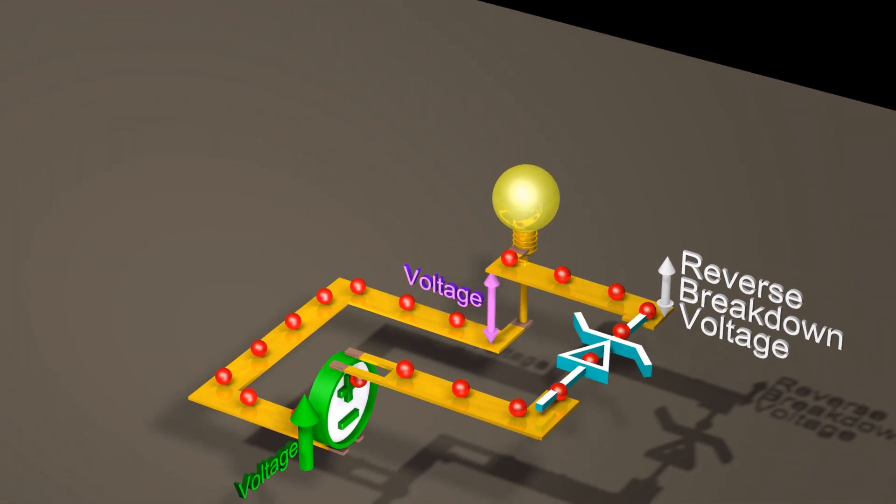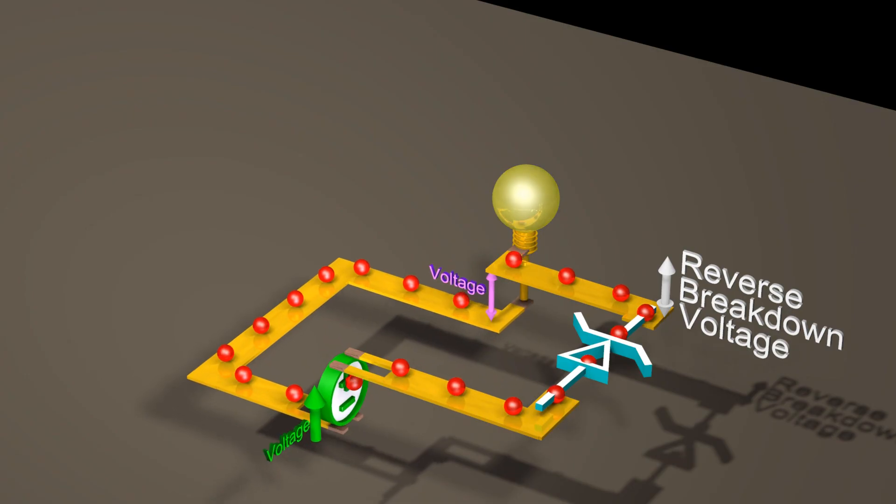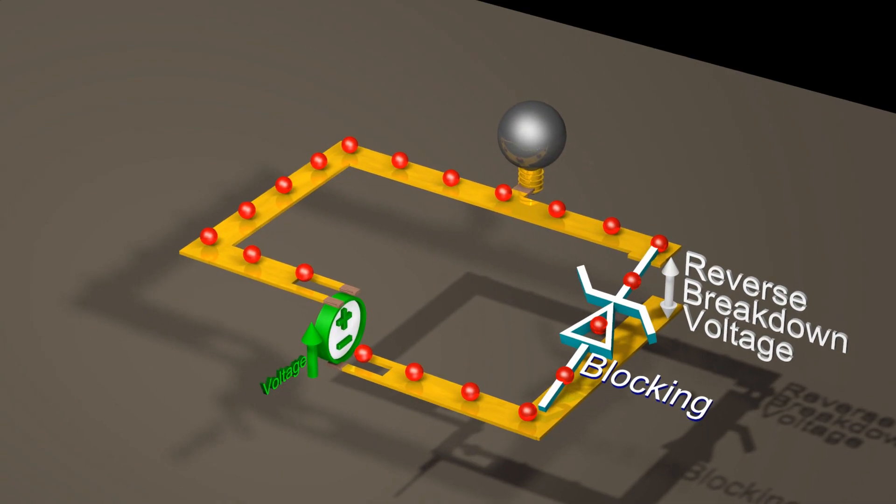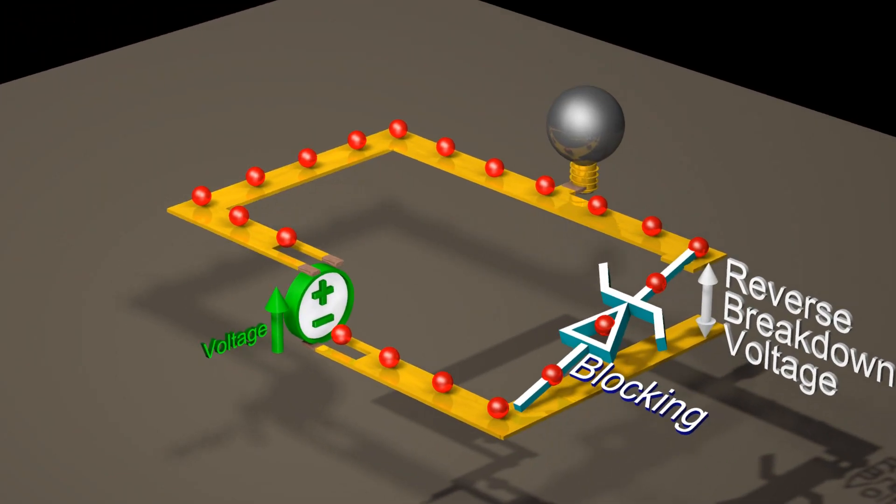Each Zener diode has a reverse breakdown voltage, and the value of this reverse breakdown voltage is different for different Zener diodes.